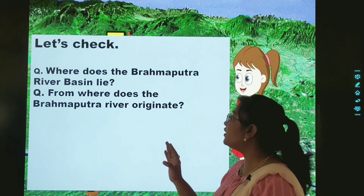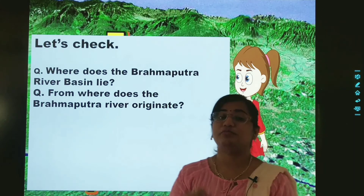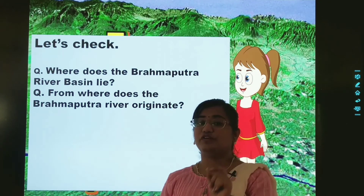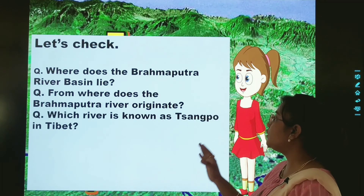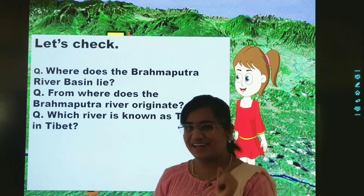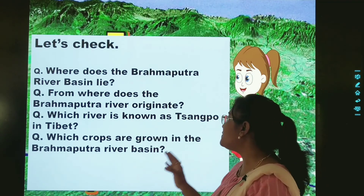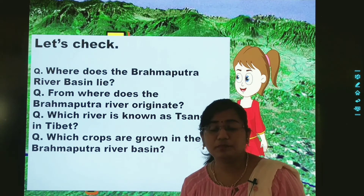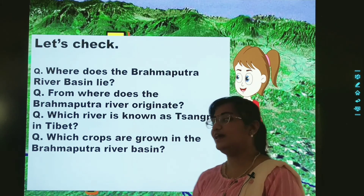Number two: from where does the Brahmaputra river originate? You will write the name of the place. Number three: which river is known as Sampo in Tibet? You know the answer, so you will be answering it on your own. Number four: which crops are grown in the Brahmaputra river basin?